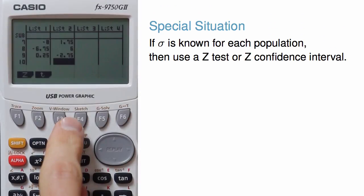One last quick note. In the rare case where the standard deviation for both populations is known and not estimated using our samples, that is we know sigma for each of the populations, we would want to choose a z confidence interval or a z test instead of a t confidence interval or a t test.